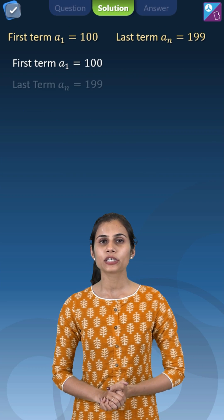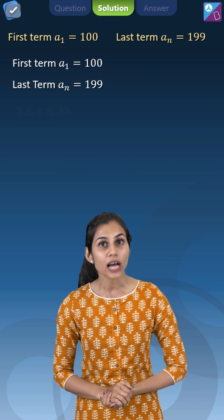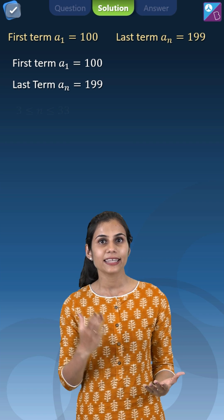So let's denote the first term by A₁, it is 100, and let's denote the last term which is the nth term by Aₙ, it is 199.